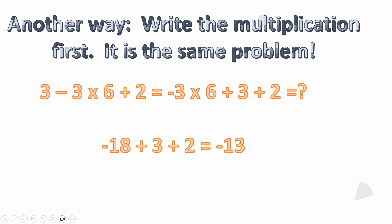Another way you can do this is write the multiplication first — it's the same problem. 3 minus 3 times 6 plus 2 is the same as minus 3 times 6 plus 3 plus 2. You're still going to get minus 18 plus 3 plus 2, which is minus 13. It makes no difference what order you do the addition and subtraction — you just have to be sure you're doing the multiplication first. A lot of people are missing the minus sign in front of the 3 times 6.